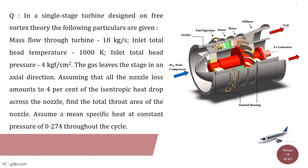Assuming that all the nozzle loss amounts to 4% of the isentropic heat drop across the nozzle. Find the total throat area of the nozzle. Assume a mean specific heat at constant pressure of 0.274 throughout the cycle.